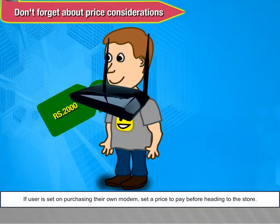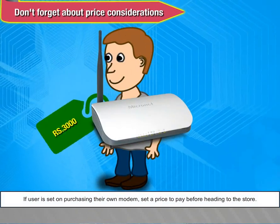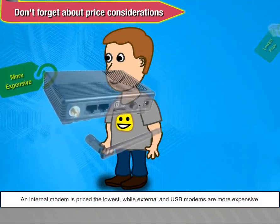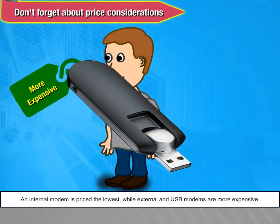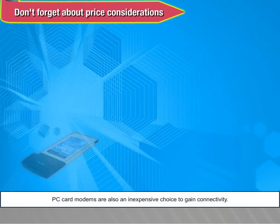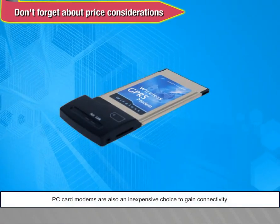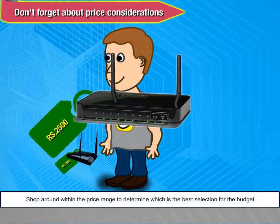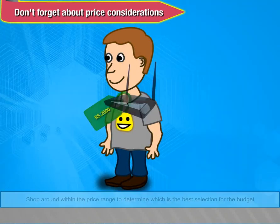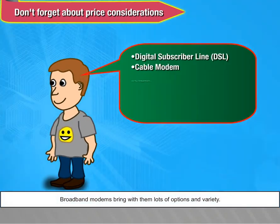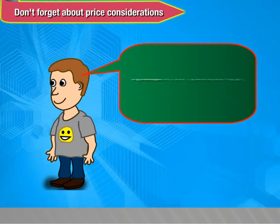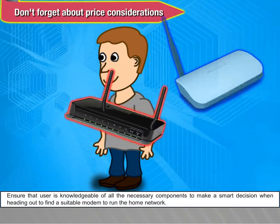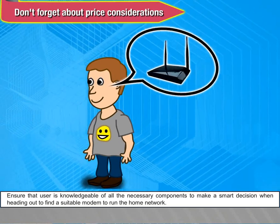If the user is set on purchasing their own modem, set a price before heading to the store. An internal modem is priced the lowest, while external and USB modems are more expensive. PC card modems are also an inexpensive choice. Shop around within the price range to determine the best selection for the budget. Broadband modems bring lots of options and varieties, so ensure you are knowledgeable of all necessary components to make a smart decision.